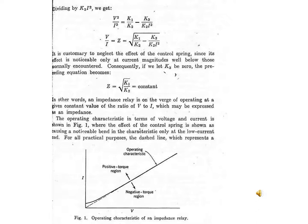Therefore, v divided by i equal to z equals square root of k1 divided by k2 minus k3 divided by k2i². It is customary to neglect the effect of the control spring, since its effect is noticeable only at current magnitudes.